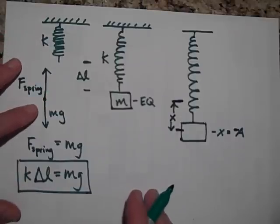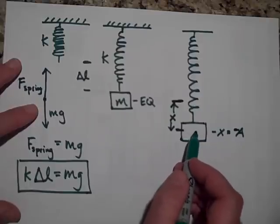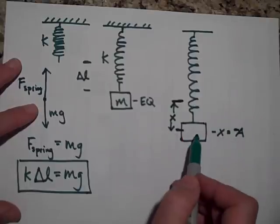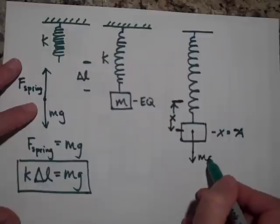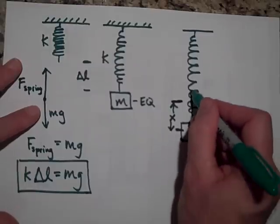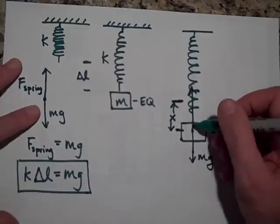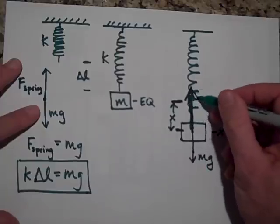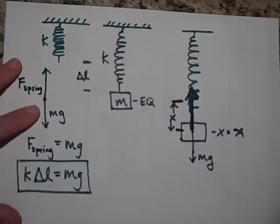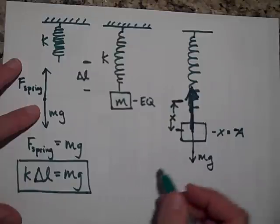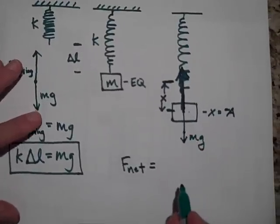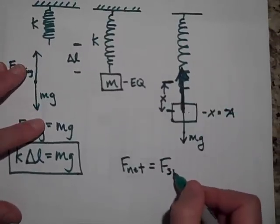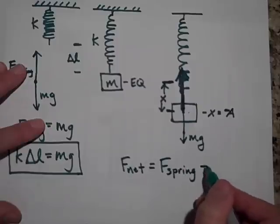So now what is the net force when you let go of this? The net force is the following: we got mg down, the same mg down as before, but the force of the spring is much bigger. It's up. That's a big vector. Can you see that big fat vector? It's bigger than mg. So the net force on this guy is going to be the force from the spring minus mg.